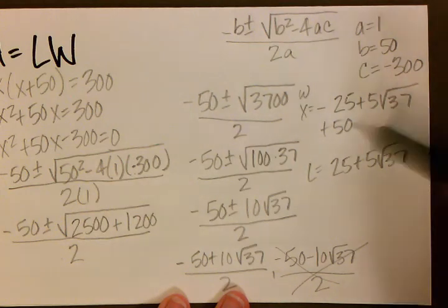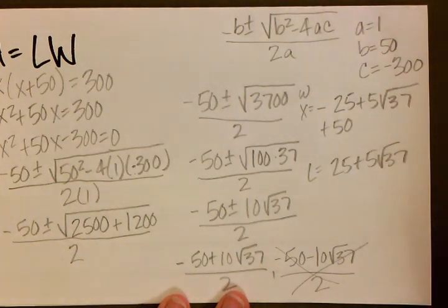So final: our width is negative 25 plus 5 square root 37, and our length is 25 plus 5 square root 37.